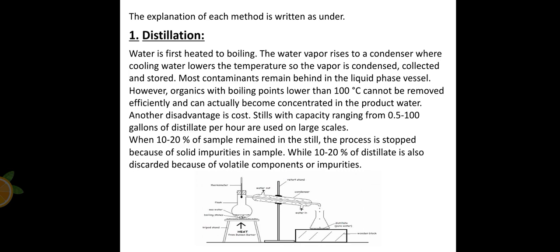The remaining 10 to 20% of the sample, we keep it in the still and we do not distillate or evaporate it because it contains impurities or volatile components. One disadvantage of this process is that it's costly because the stills capacity ranges from 0.5 to 100 gallons of distillate per hour which is used on large scale. This is distillation used to purify water.